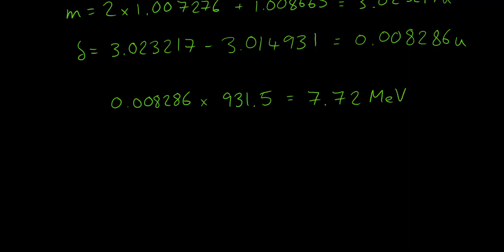If your exam board does not give you this shortcut, you would have to use the longer method, which is to convert U into kilograms, then multiply by C squared to get the energy in joules, and then finally convert that answer to electron volts. So let's try that quickly. So 0.008286 multiplied by 1.661 times 10 to the minus 27, multiplied by the speed of light squared, 3 times 10 to the power of 8 all squared, gives us 1.24 times 10 to the minus 12 joules.